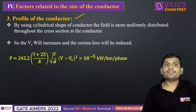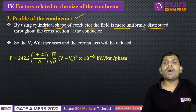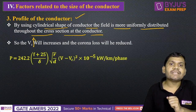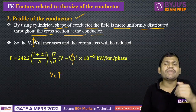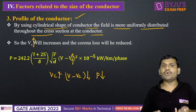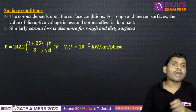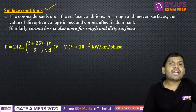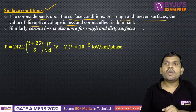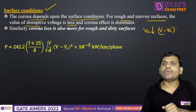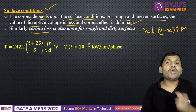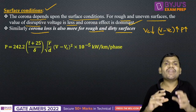One more important factor is the profile of the conductor. If you use a cylindrical shape of the conductor, the field is more uniformly distributed throughout the cross-section. Once the field is uniformly distributed, Vc will increase. If Vc increases, V minus Vc reduces, and corona loss is reduced. Also, surface conditions matter: for rough and uneven surfaces, the critical disruptive voltage is less, so V minus Vc increases and power loss increases. Corona loss is also more for rough and dirty surfaces.